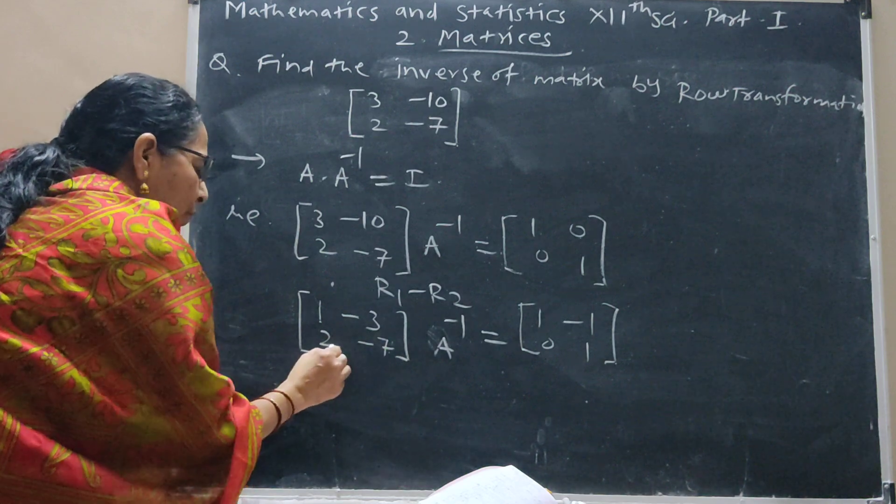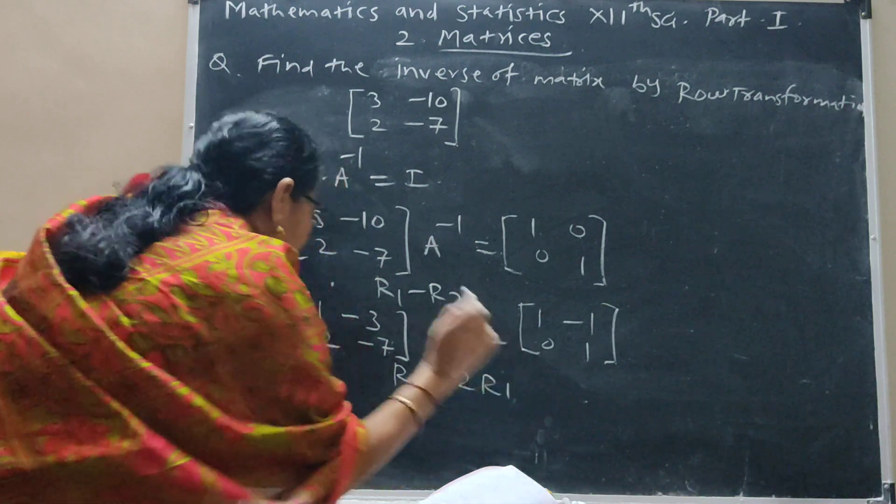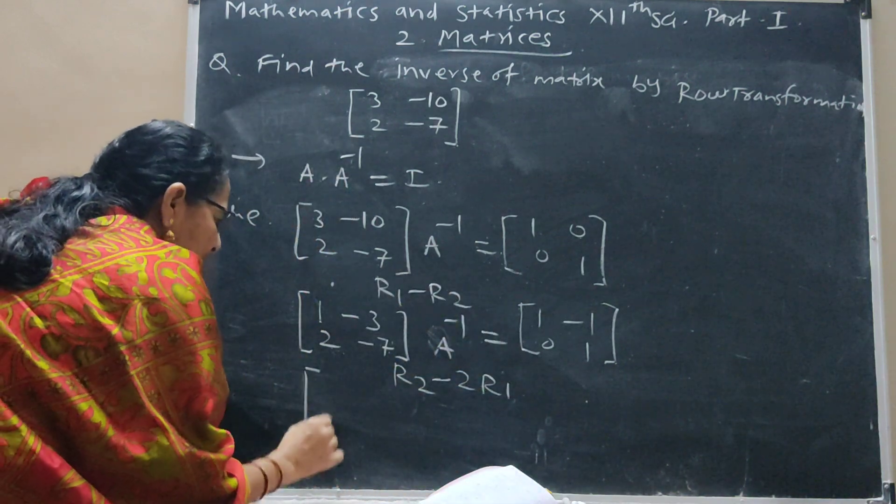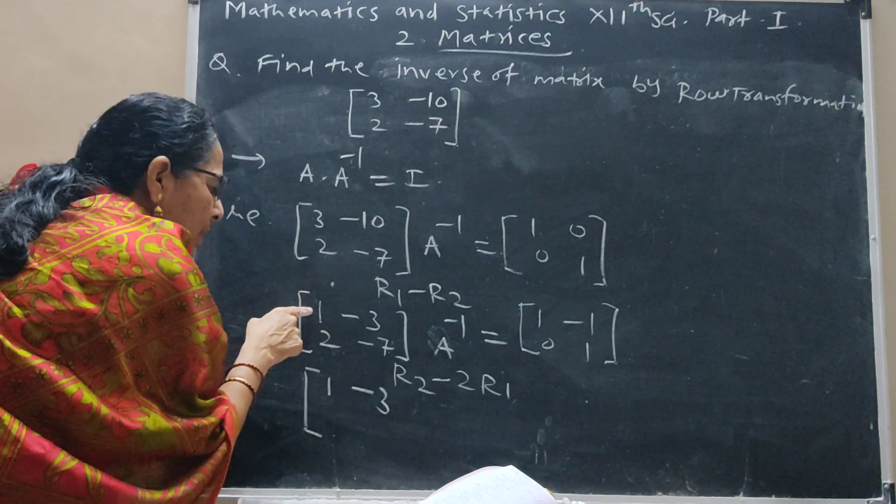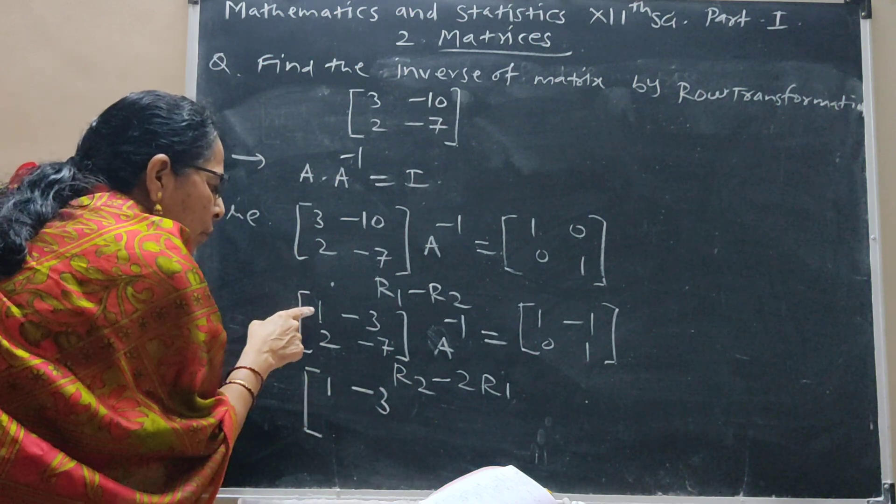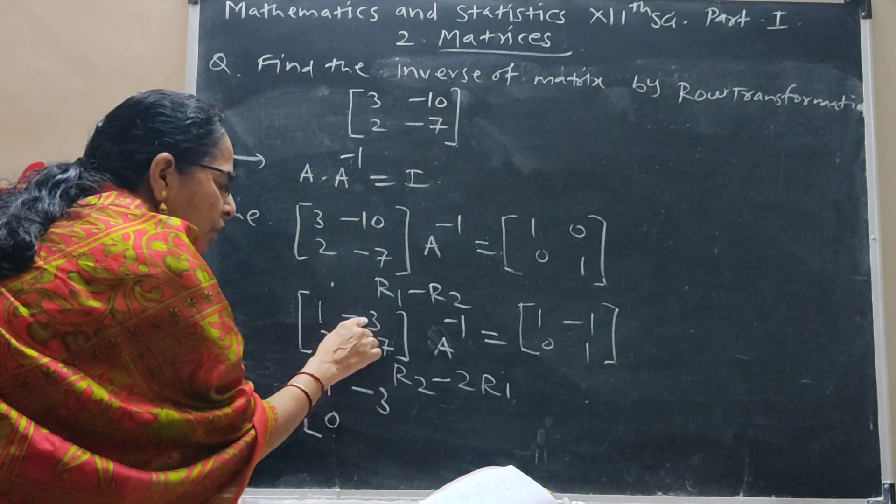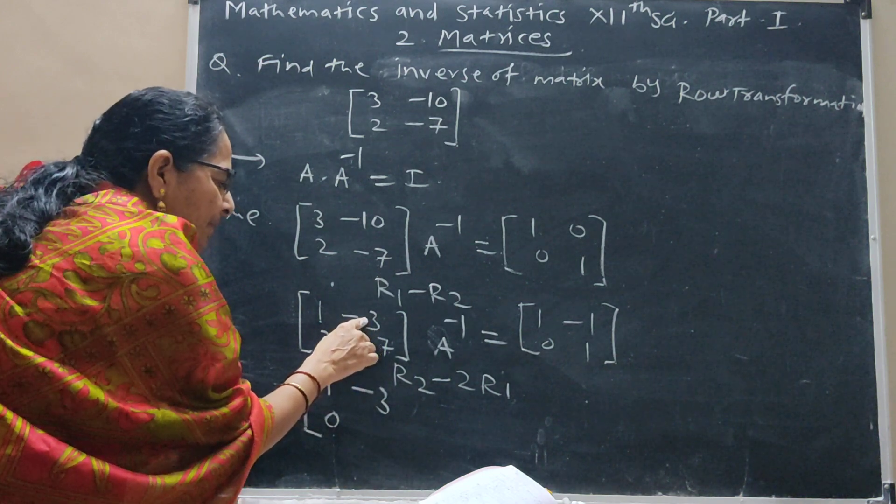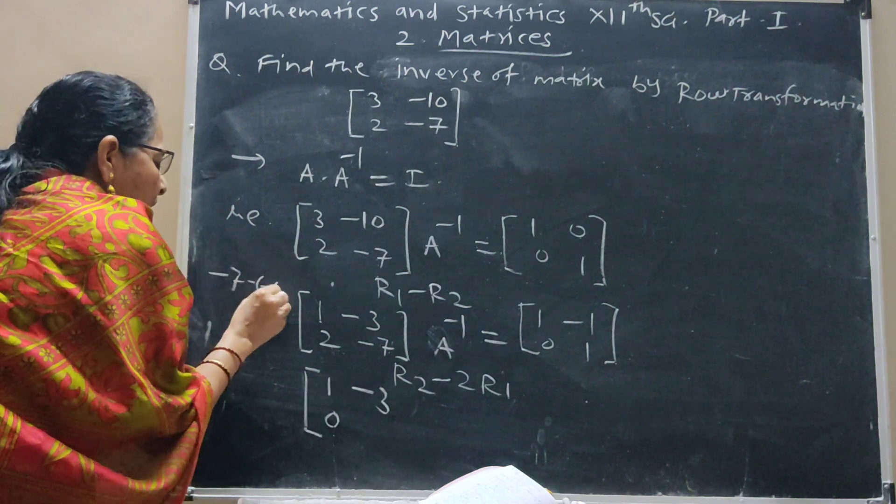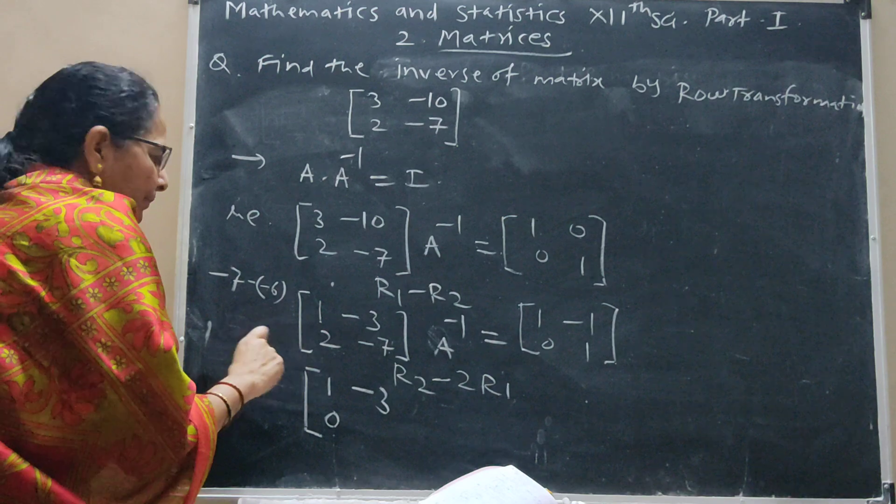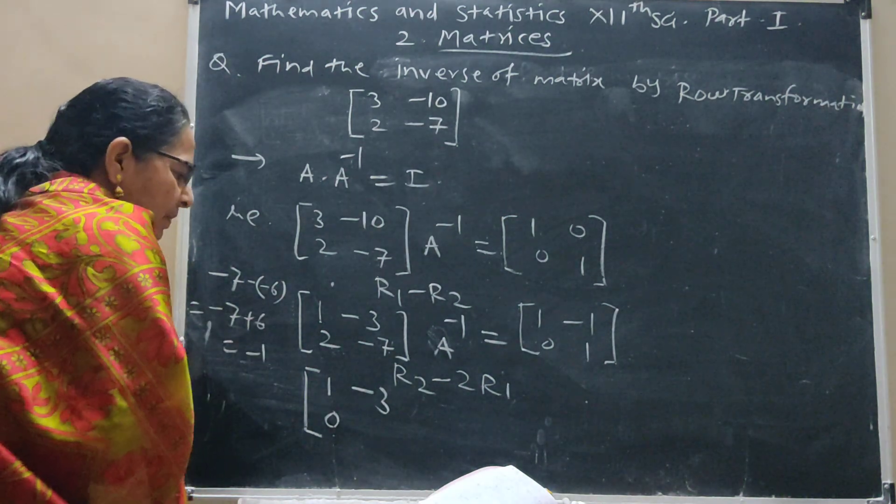Here we require 0, so R2 minus 2R1. First row as it is. R2 minus 2R1: twice of this is 2, 2 minus 2 is 0. Minus 7, twice of this is minus 6. Minus 7 minus minus 6, which is minus 7 plus 6. Finally it is minus 1.